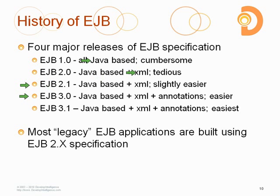During the EJB 2.1 era, an open source framework called Spring pushed the envelope by following a convention-based approach instead of a configuration-based approach. A lot of developers flocked to Spring because convention made it much easier to build and deploy applications. Sun and the JCP then realized the configuration approach might be a bad strategy, and starting with EJB 3.0 they transitioned the framework to a convention-based approach.